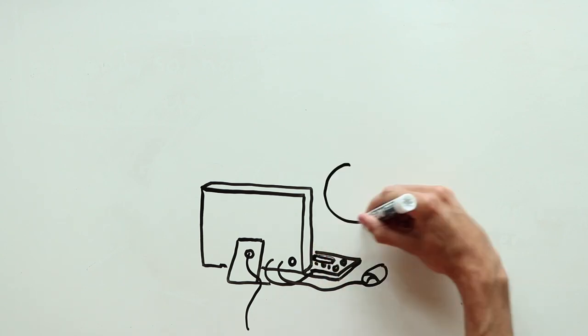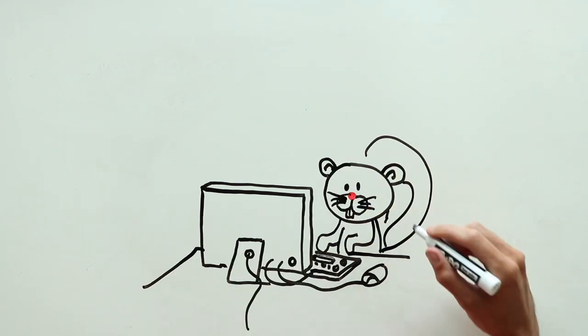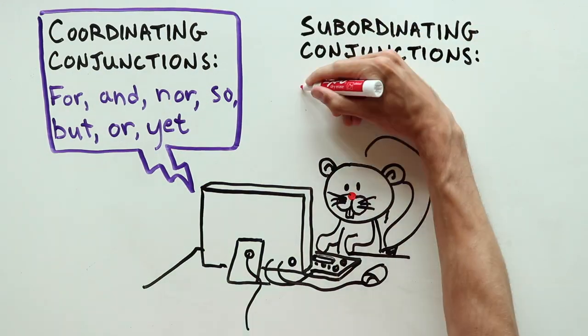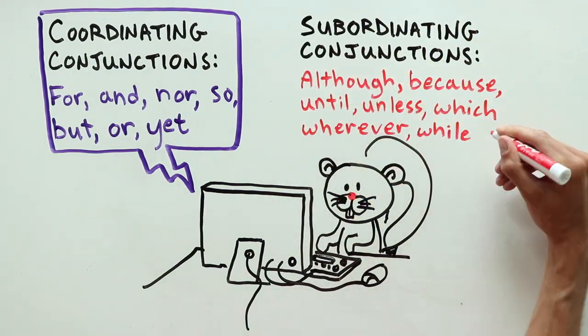After doing some research, GrammarSquirrel has come up with the following examples of some common coordinating and subordinating conjunctions. If you check your writing, you'll find these and others throughout.